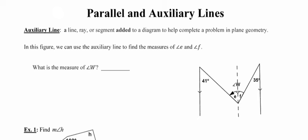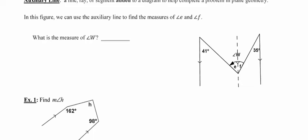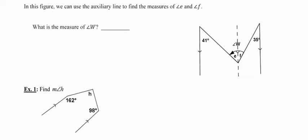In the very first example, we are going to use an auxiliary line in order to find the measures of angles E and F. I'm going to take my highlighter and highlight the parallel lines. Sometimes it's helpful to extend the parallel lines, and you can do that because lines go on forever.